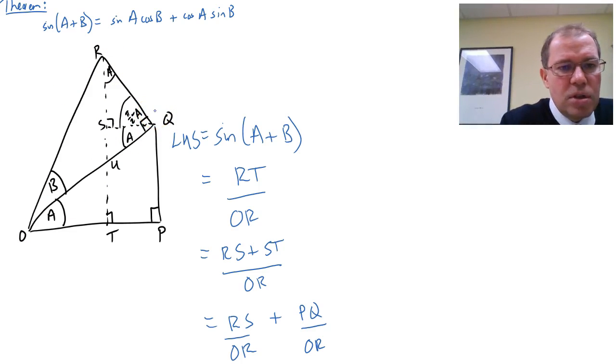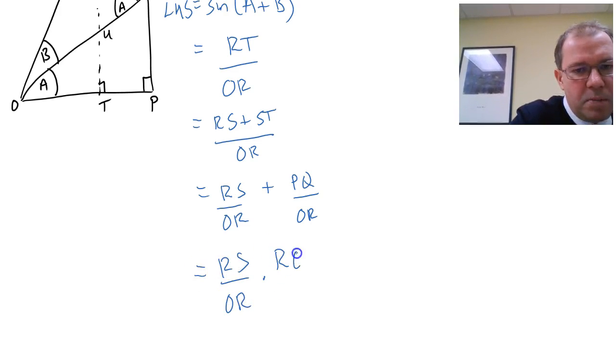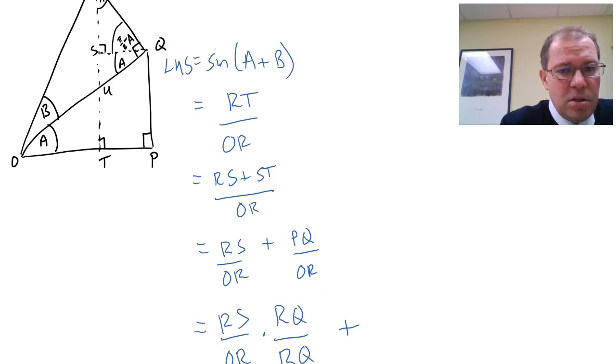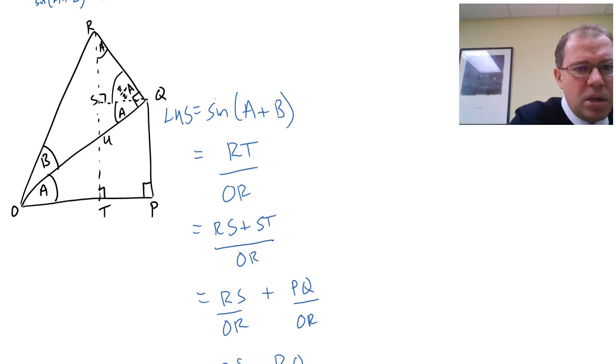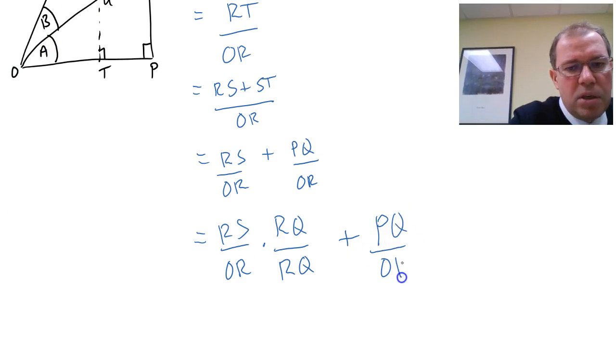So I'm going to introduce the length RQ, and I'm going to use the old trick of multiplying the fraction by 1. So if I multiply this fraction by RQ over RQ, it stays the same. It doesn't alter because I've multiplied by 1 effectively. I'm going to do the same trick with PQ over OR. Let's look at PQ over OR. Again, different triangles. Look, PQ is in this bottom triangle, and OR is in the top large triangle. But they've got a common length OQ. So I'm going to do the same trick. I'm going to multiply top and bottom of PQ over OR by OQ over OQ.